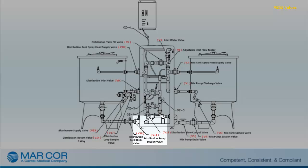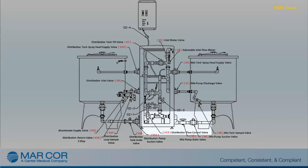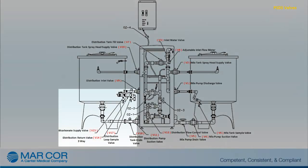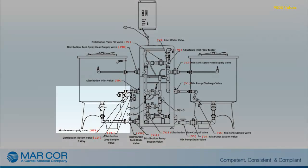When opened, V11, the Distribution Pump Suction Valve, allows for the Distribution Tank Solution to flow to the Distribution Pump. When opened, V13, the Distribution Flow Control Valve, allows for the solution to be pumped from the Distribution Pump to the Distribution Loop. When opened, V14, the Distribution Return Valve, allows for the solution returning from the Distribution Loop to either return to the Distribution Tank or be routed to the Drain. When opened, V15, the Bicarbonate Supply Valve, acts as a filling port for filling individual bicarb containers.